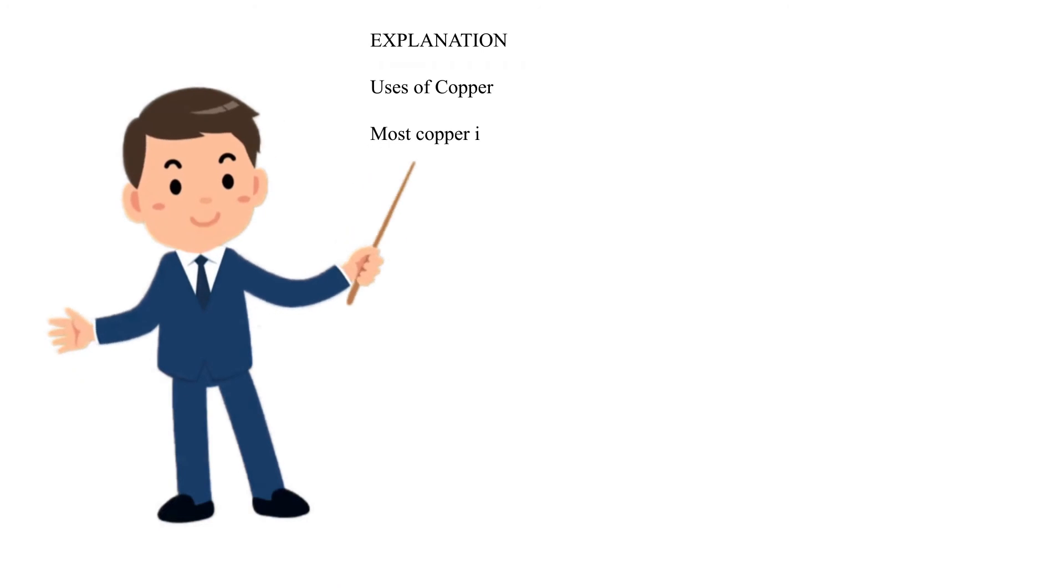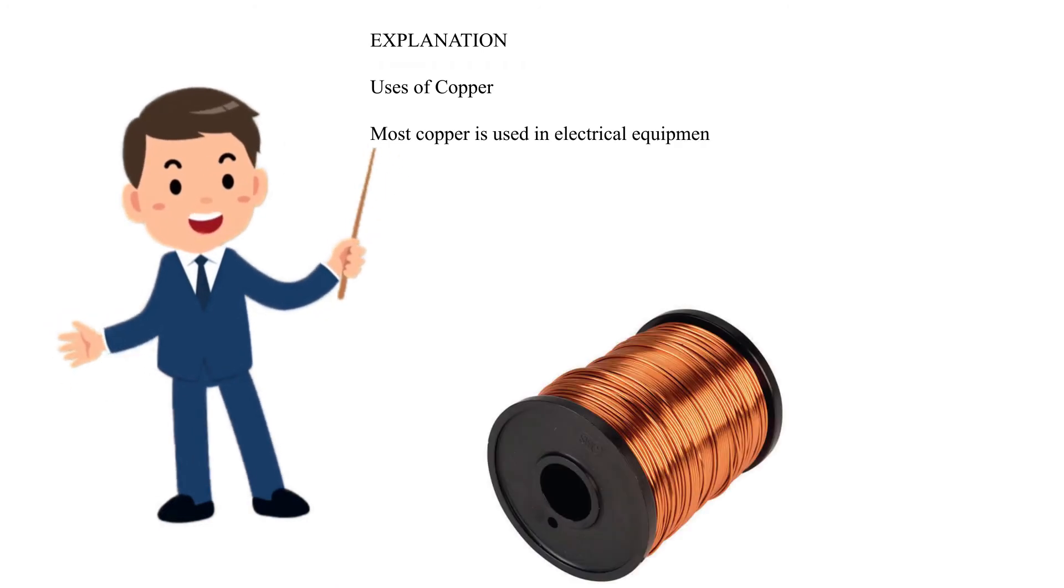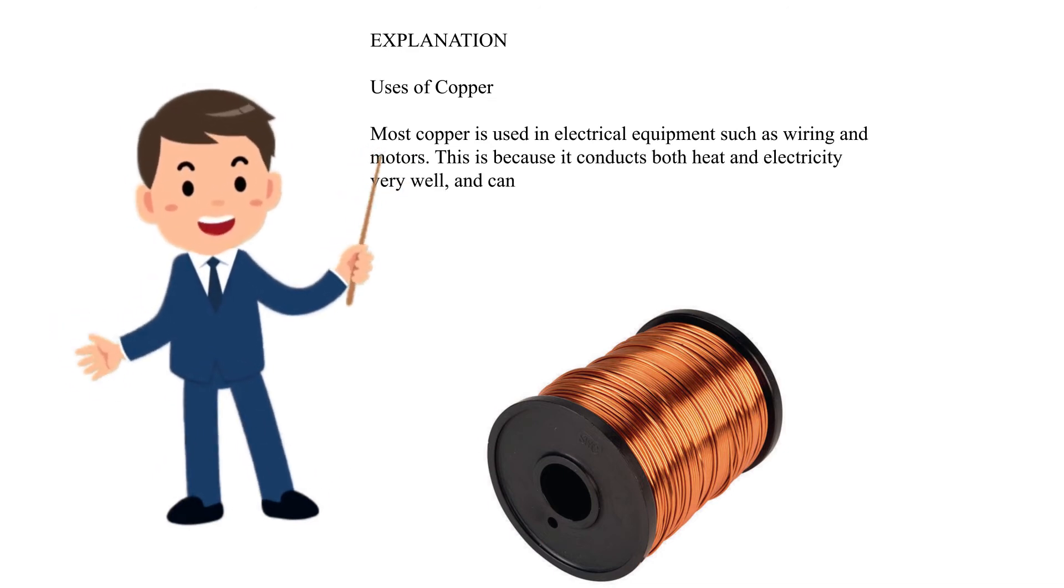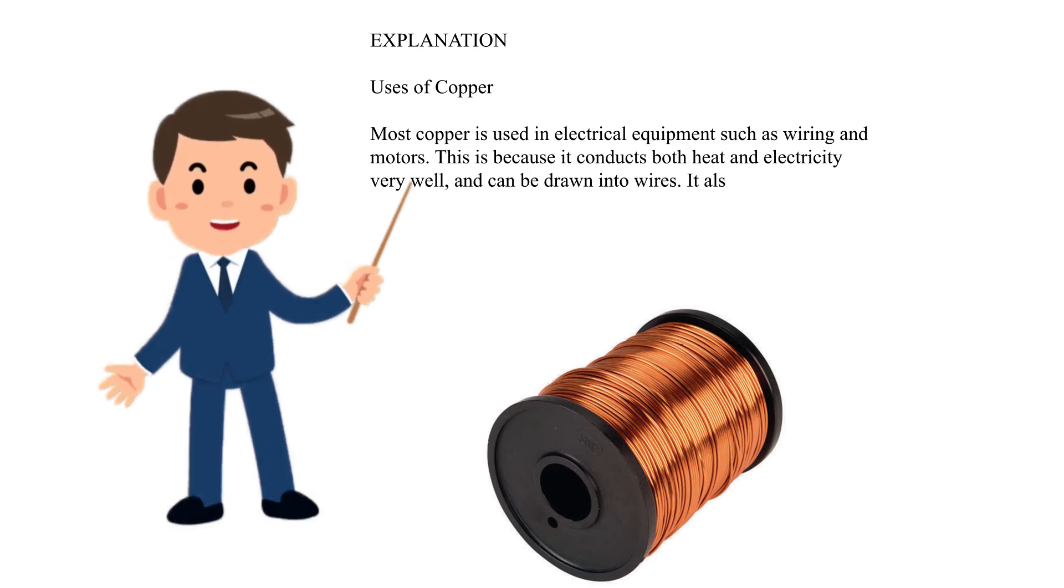Explanation. Uses of copper. Most copper is used in electrical equipment such as wiring and motors. This is because it conducts both heat and electricity very well, and can be drawn into wires.